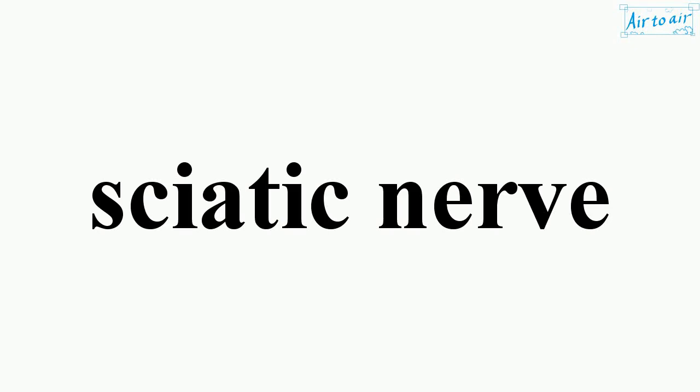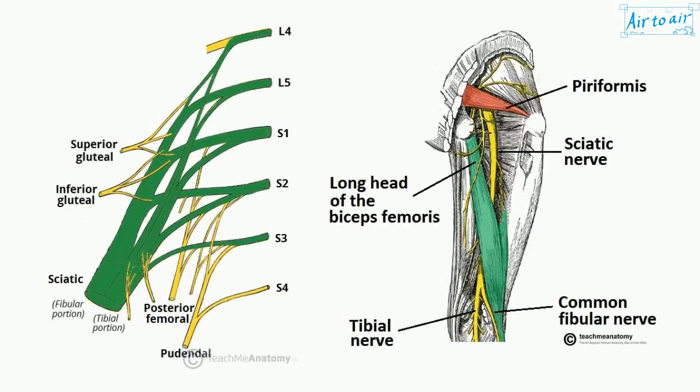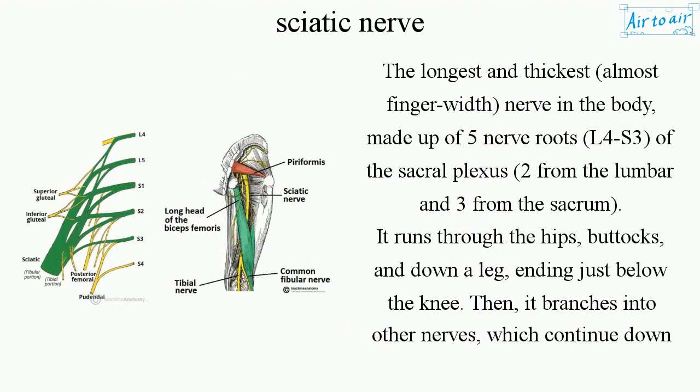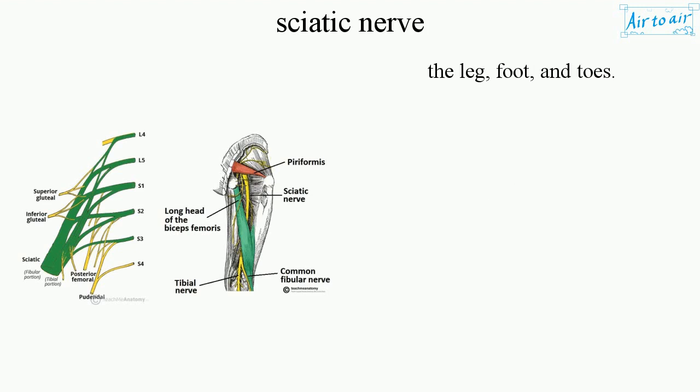The sciatic nerve is the longest and thickest — almost finger-width — nerve in the body, made up of five nerve roots L4 to S3 of the sacral plexus: two from the lumbar and three from the sacrum. It runs through the hips, buttocks, and down a leg, ending just below the knee, then branches into other nerves which continue down the leg, foot, and toes.